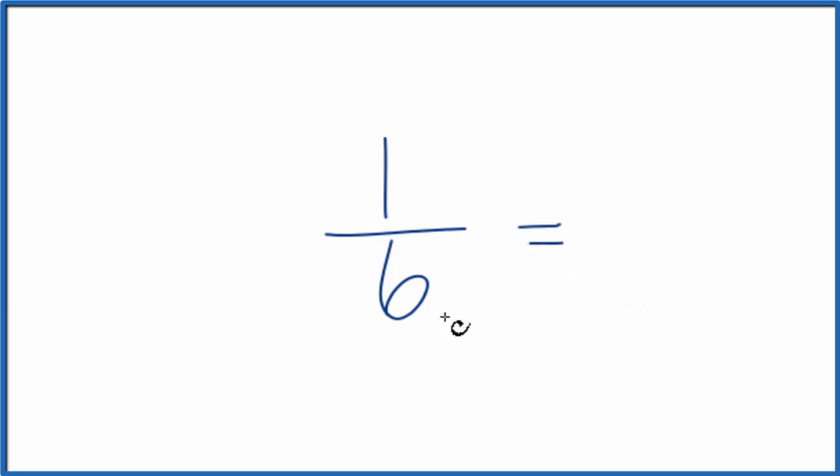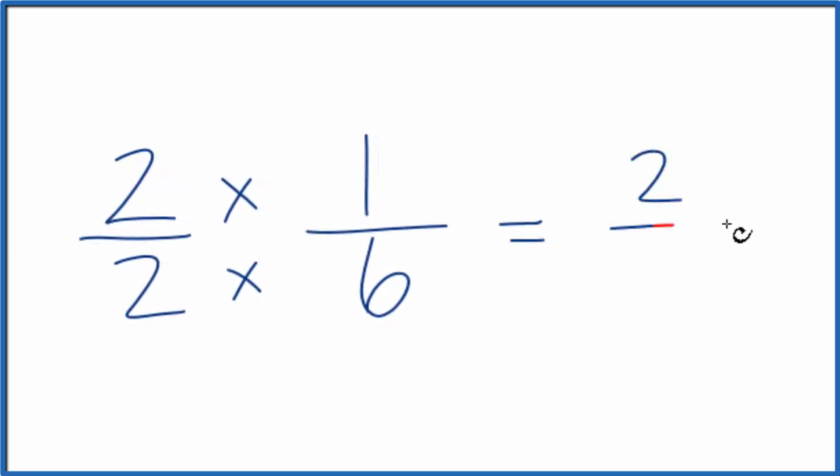So we could multiply this by 1 and it would still be 1/6. So let's multiply it by 2 over 2, because 2 divided by 2, that's 1. So we haven't changed anything. 2 times 1, that's 2. 2 times 6, that's 12.